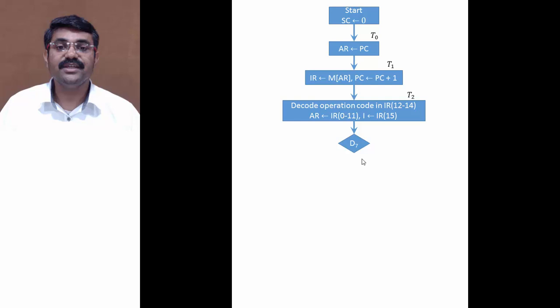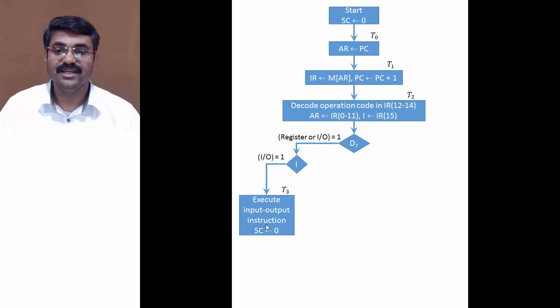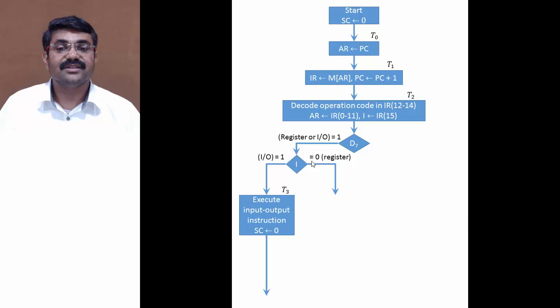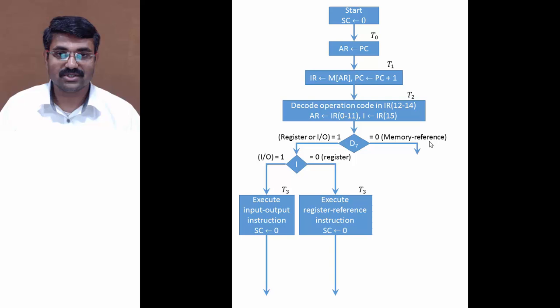If d7 is 1, it is either register or IO. To decide between them, we check the I bit. If I is 1, it is an input-output instruction — execute the IO instruction and make the sequence counter 0. If I bit is 0, it is a register reference instruction — at time t3, execute the register reference instruction and make the sequence counter 0. If d7 is 0, it is always going to be a memory reference instruction, which has two sub-cases: direct or indirect, decided by the I bit.